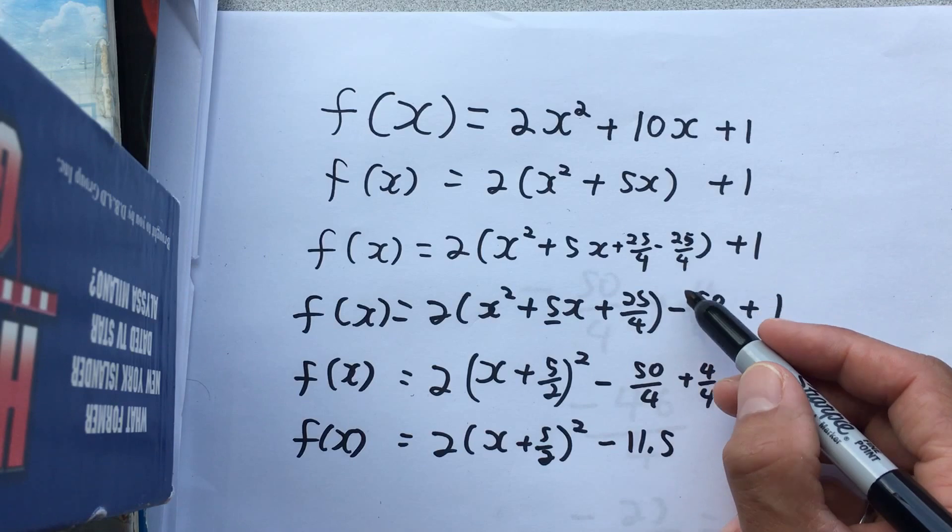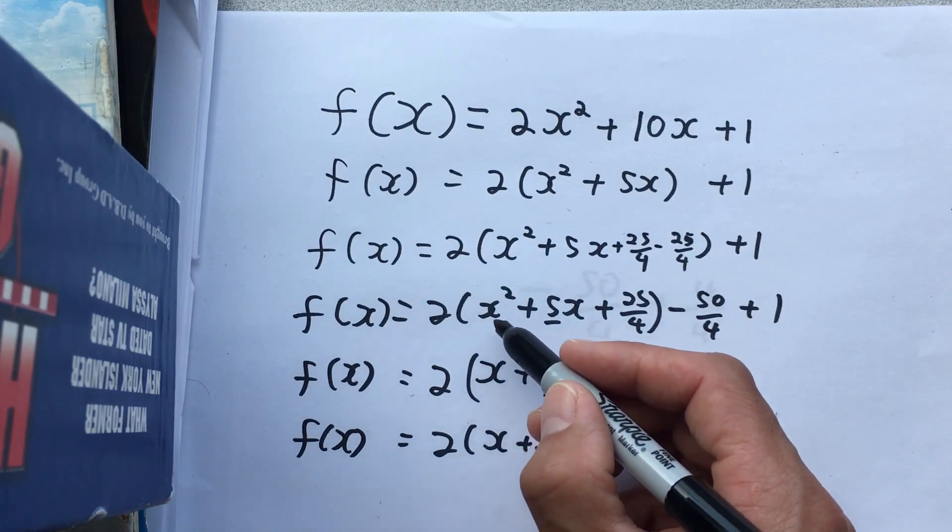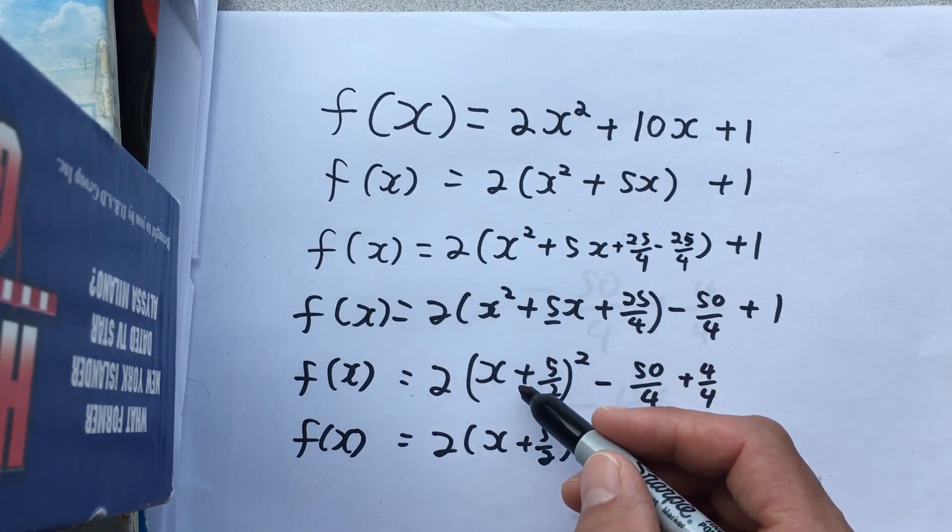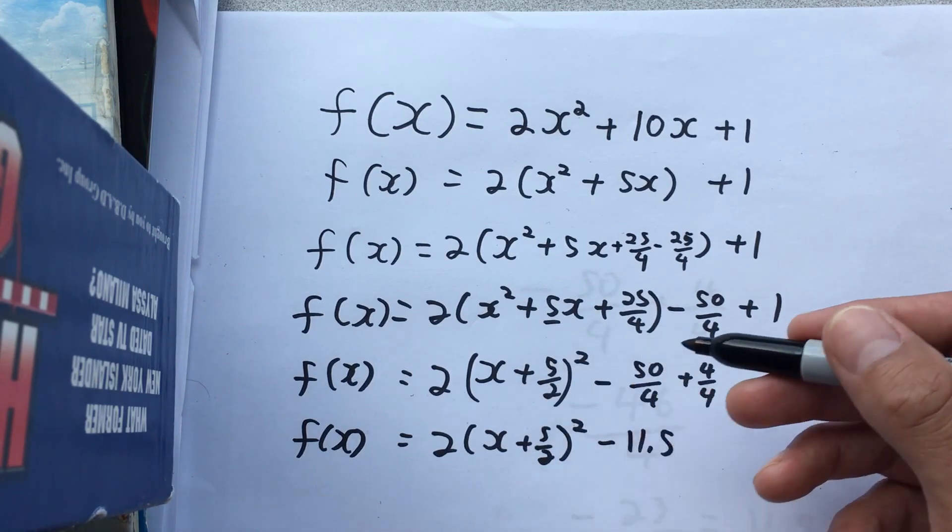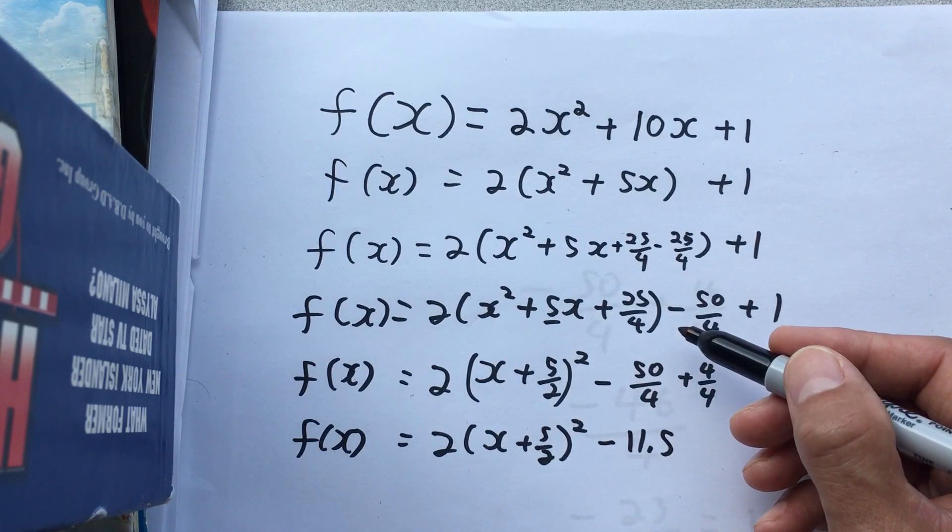We remove that fourth term from the brackets so that we've got nothing but our perfect square, which can be factored this way. You know you factored it correctly if you try on a separate sheet of paper multiplying it out, and you get the previous line.